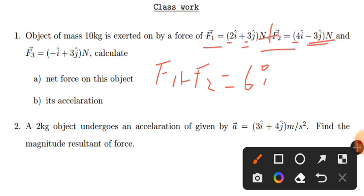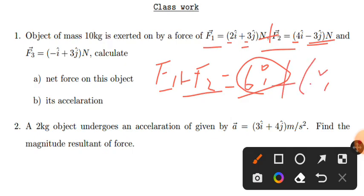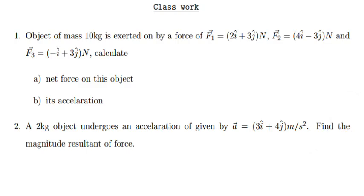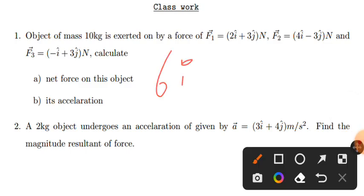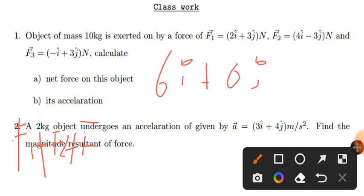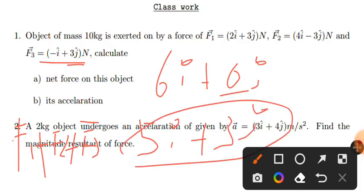Then adding F3 = -i + 3j: F1 + F2 + F3 gives 6i + (-i) = 5i, and 0j + 3j = 3j. So the total resultant force is 5i + 3j.